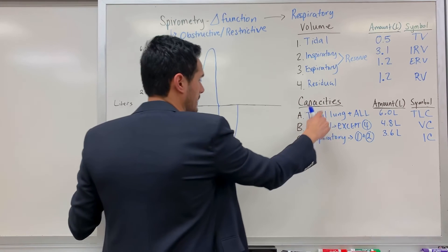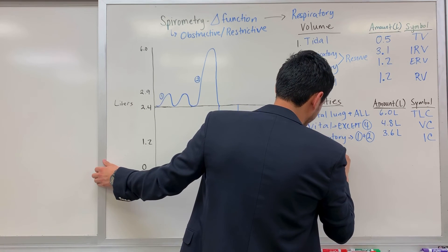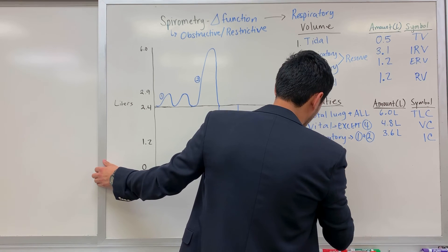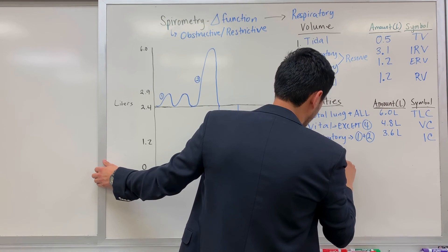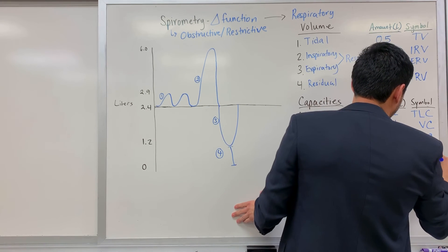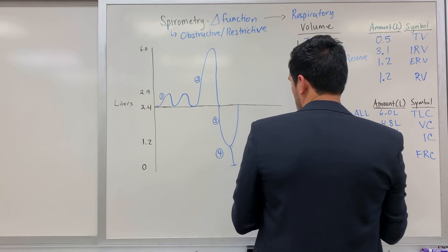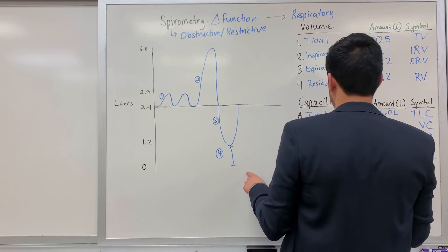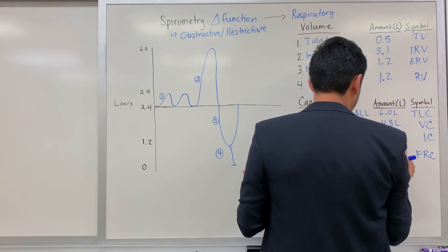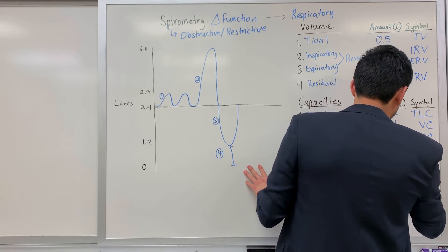The last one we're going to go over is what's known as the functional residual capacity, denoted as FRC. A typical value, we're just including both of these, so we add both of these numbers up, which gives us 2.4 liters.